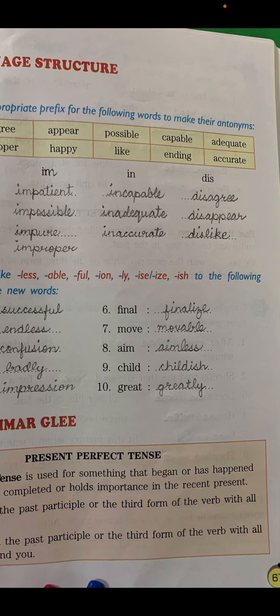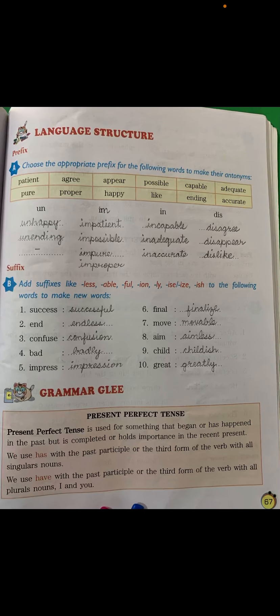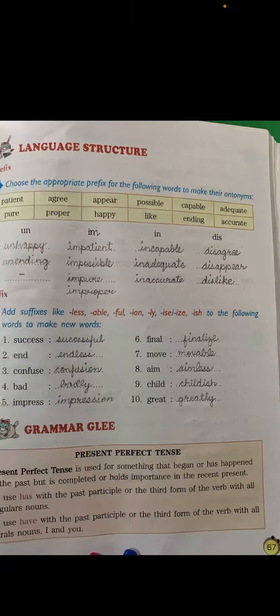The first word is 'patient.' From the four prefixes, which one makes its antonym? You will add 'im' — impatient. I have written it; you also write like that. Next word is 'agree' — the opposite of agree is 'disagree,' so you add 'dis' and write disagree.